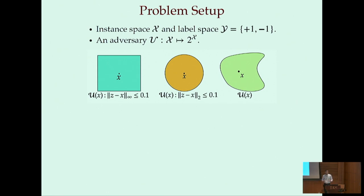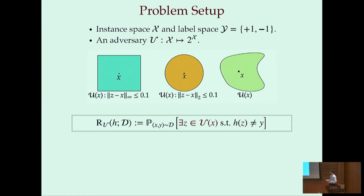Once we have this model of adversarial robustness that we want to achieve, our main object of interest is the robust risk. The robust risk of a predictor H on a distribution D is defined as the probability over samples X, Y drawn from D that there exists a perturbation Z inside the set U of X where the classifier H makes a mistake. So in other words, a predictor H is robust on X, Y if and only if it labels every point in every perturbation in the set U of X with the label Y.